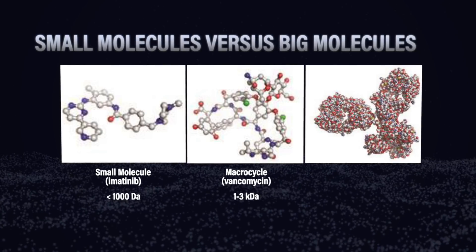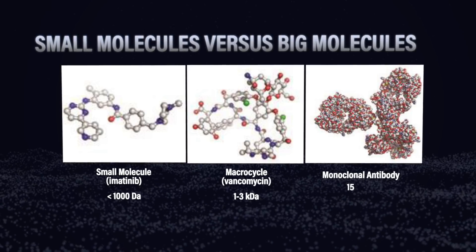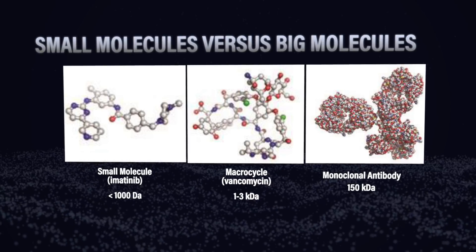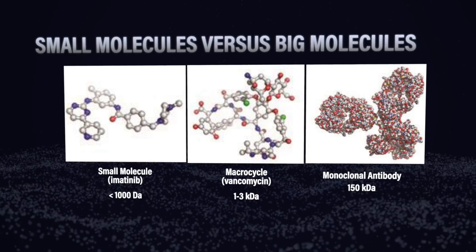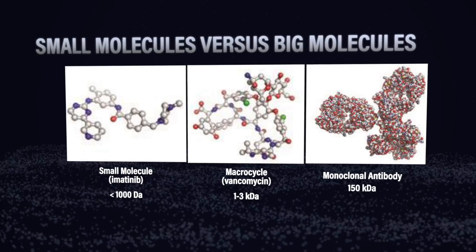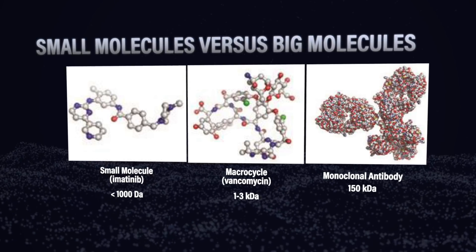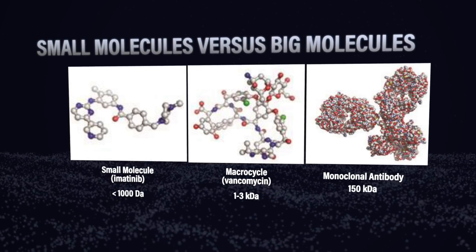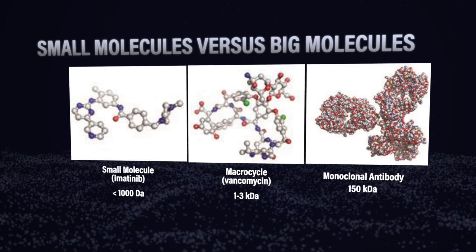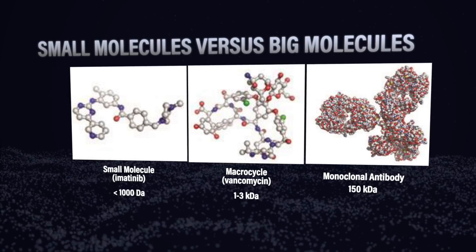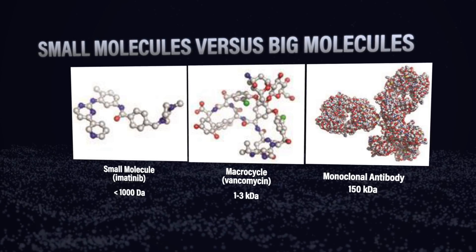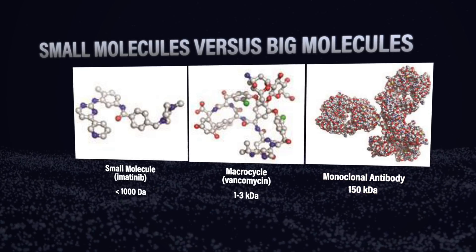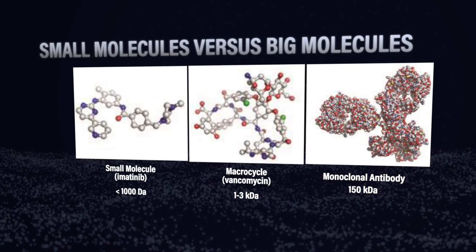But then you start talking about proteins, and they get quite large, as you can see with this monoclonal antibody. You definitely have to treat these molecules differently when you're doing chromatography. It's obvious to see the complexity here — the small molecule is not that complex, but that protein or antibody is ginormous. It's going to behave very differently.